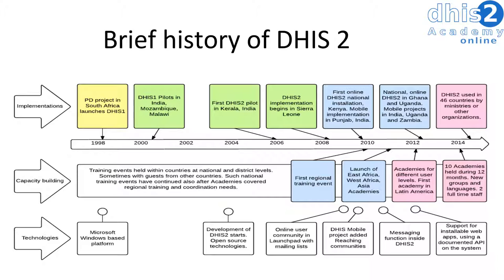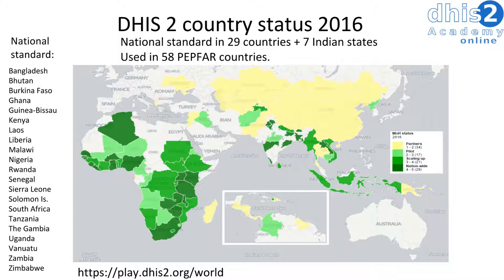In 2012, a series of DHIS2 academies were launched, allowing for regional capacity building. By the end of 2014, 46 countries were using DHIS2, and this has only grown since then. In 2016, there were 29 countries and 7 Indian states that use DHIS2 as their national standard. Various partner countries and other agencies are also using DHIS2 in various stages of implementation.